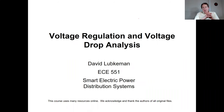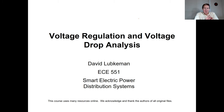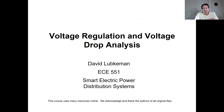Up to this point, we've gone over the different components in a distribution circuit, especially those that cause voltage drop like transformers, overhead lines, and underground cables. What we're going to talk about next is what type of voltage drop we would typically see in distribution circuits, and how we're going to compensate for that if the voltage gets too low. In this lecture, we'll get into voltage regulation and how we can do some basic voltage drop analysis using K factors.